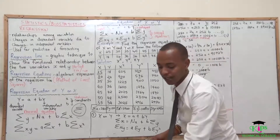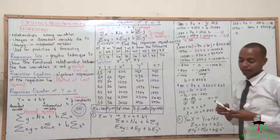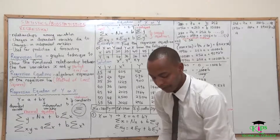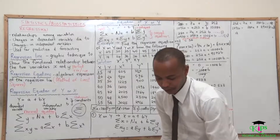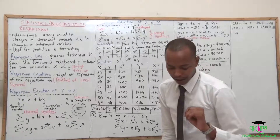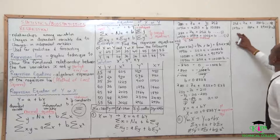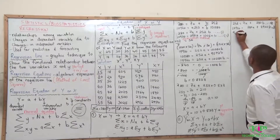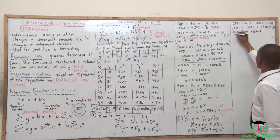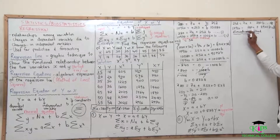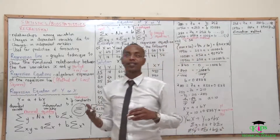We are supposed to solve those simultaneous equations like we just did. Instead of using the substitution method, which will take a lot of time, let's use the elimination method. We want to eliminate A. The only way to eliminate A is by multiplying — we have 280 and 7 — so 280 divided by 7 gives us 40.